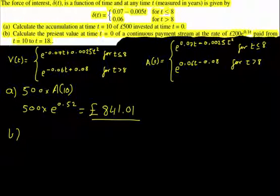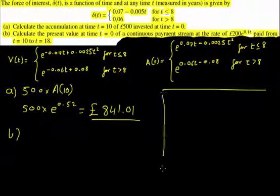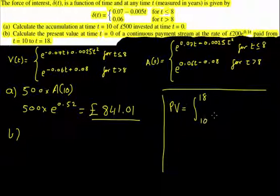Let's look at part B. Calculate the present value at time t equals 0 of a continuous payment stream at a rate of all that, paid from t equals 10 to t equals 18. So I'm just going to note over here, a formula for the present value is equal to the integral between whatever time intervals, so we'll have 18 and 10, and we use rho of t multiplied by v of t, dt.